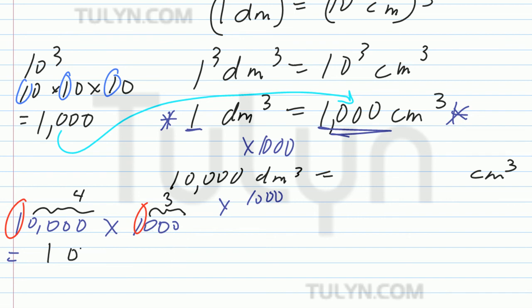And then, you get 1, 2, 3, 4, 5, 6, 7 zeros, right? So, 10,000 decimeters cubed equals 10,000,000 centimeters cubed.